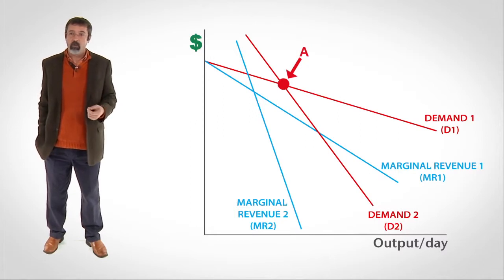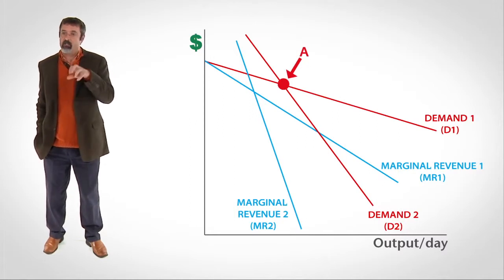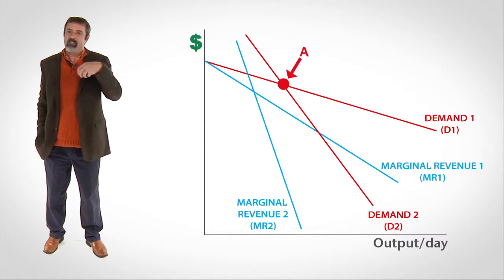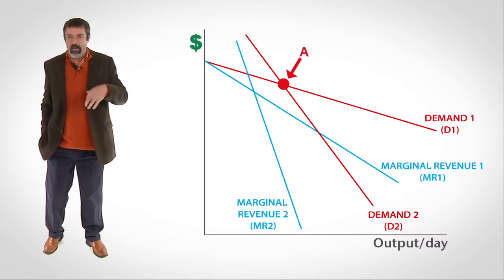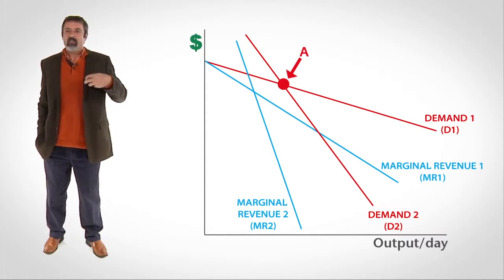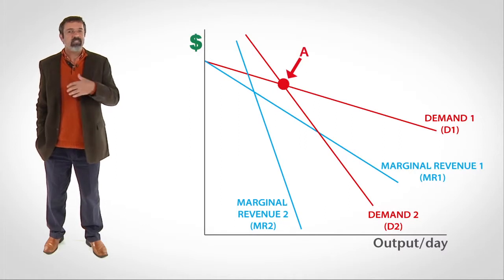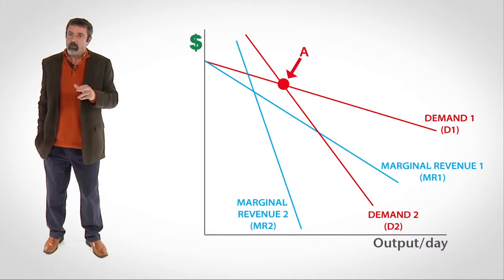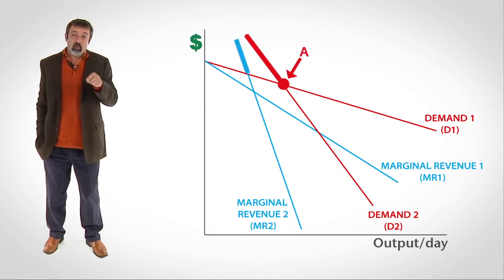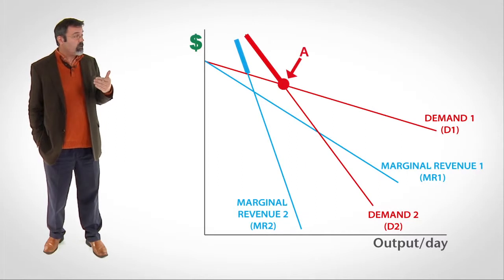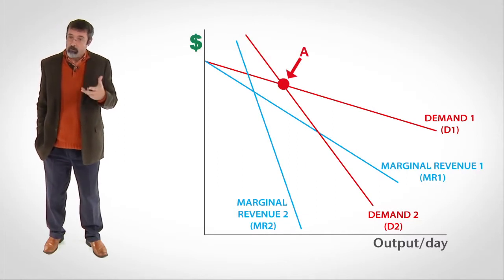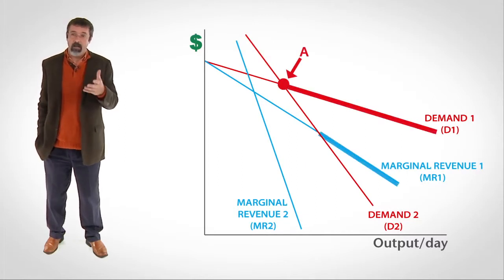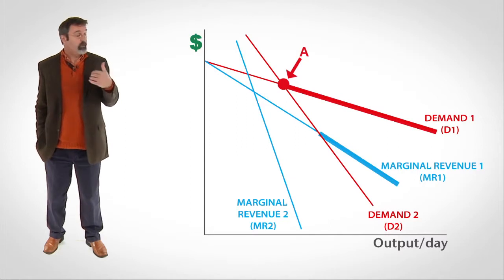Because the oligopoly firm is sometimes on the flat set of demand-marginal-revenue curves and sometimes on the steep set of demand-marginal-revenue curves, the oligopoly firm does not use the entirety of either curve. The oligopoly firm is never on D2 or MR2 when the price rises above point A. Similarly, the oligopoly firm is never on D1 or MR1 when the price falls below point A.